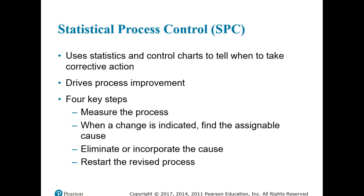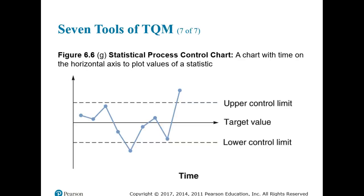Statistical process control (SPC) monitors standards, makes measurements, and takes corrective action as a product or service is being produced. It uses statistics and control charts to tell when to take corrective action, driving process improvement. The four key steps are: (1) measure the process, (2) when a change is indicated, find the assignable cause, (3) eliminate or incorporate the cause, and (4) restart the revised process. If samples fall within acceptable limits, the process continues; if they fall outside specific ranges, the process is stopped and the assignable cause is located and removed.